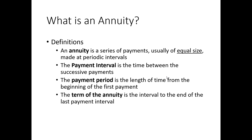An annuity is a series of payments — more than one — of equal size. That's the first big point: every payment is of equal size. It's a little different from what we experienced with simple interest and compound interest, where payments were changing all over the place and weren't required to be the same. When we're dealing with annuities, we're talking about a series of payments that are all the same amount, the same size.